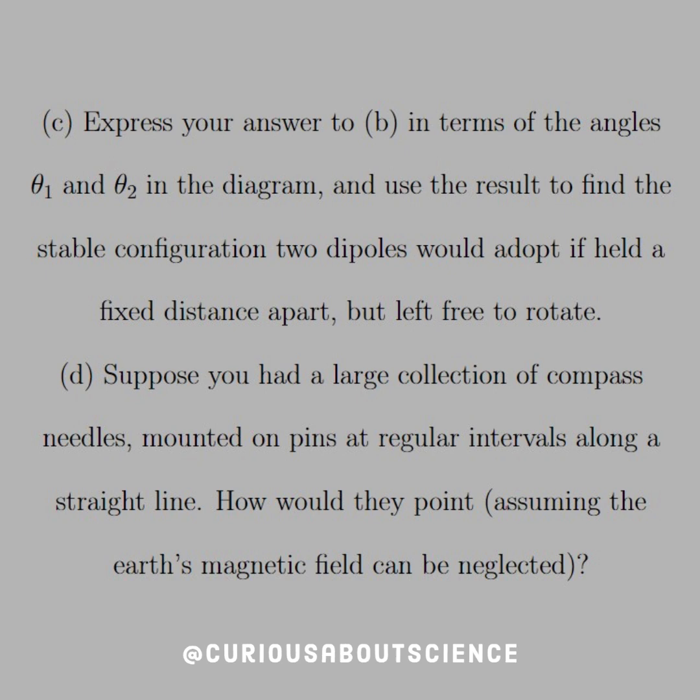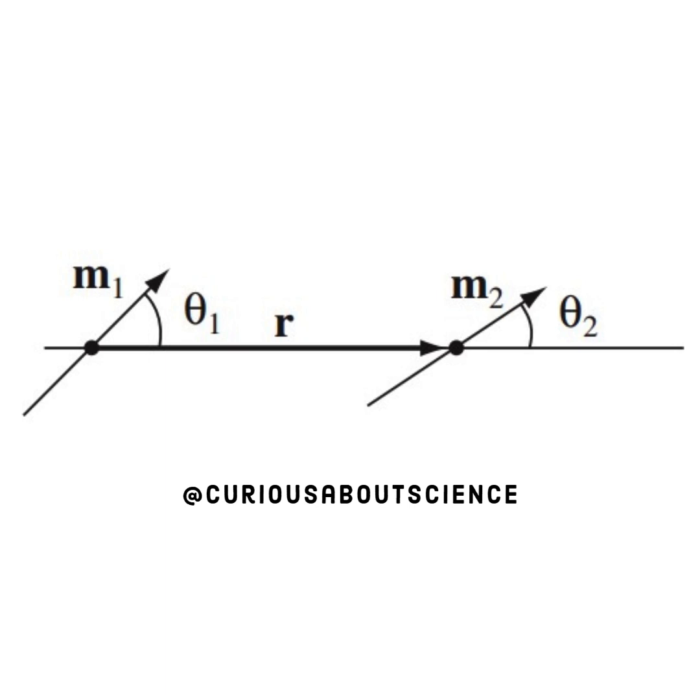Part D, suppose you had a large collection of compass needles mounted on pins at regular intervals along a straight line. How would they point? Assuming the Earth's magnetic field can be neglected. All right, so let's look at the diagram. We have magnetic dipole M1 and dipole M2 separated by some distance R and they form their appropriate angles as such. Again, we've seen this set up before so it shouldn't look surprising.